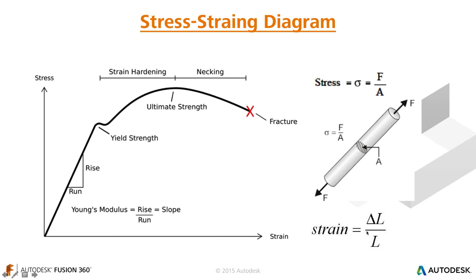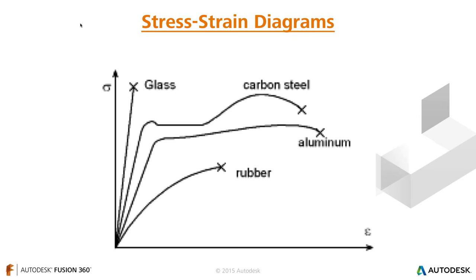On the x-axis we have strain — that's the change in length over the original length (delta L over L). Rubbers and plastics don't really have a linear region, so we usually have to go to a nonlinear solver and use different material estimations to approximate those curves. In the current state of Fusion 360, we can analyze the linear elastic regime for mostly metals. Glass we can't really analyze as well.